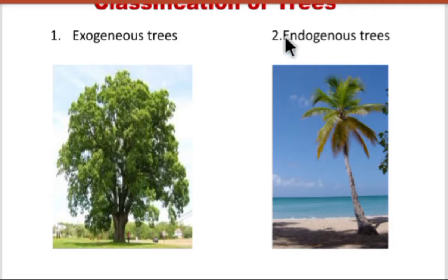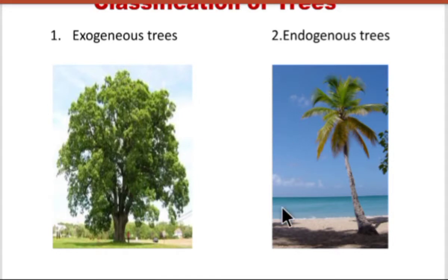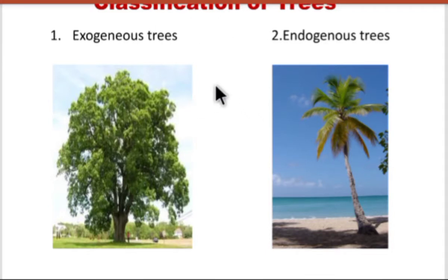The second type is endogenous trees. These endogenous trees grow inwards and have very limited application in the civil engineering field. These trees grow inward and have fibrous structures. The main example of these trees is bamboo, which has a fibrous structure. So these are the two categories of trees depending upon their growth.